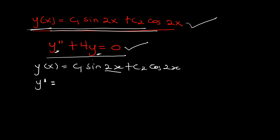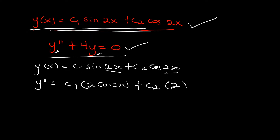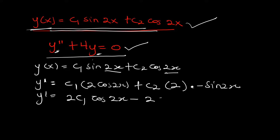Differentiating sine(2x): the derivative of the angle 2x gives 2, and differentiating sine gives cosine, so we get 2·cos(2x). Then c2 is a constant; differentiating cos(2x) gives negative 2·sine(2x). Simplifying, y' equals 2c1·cos(2x) minus 2c2·sin(2x). This is the first derivative.